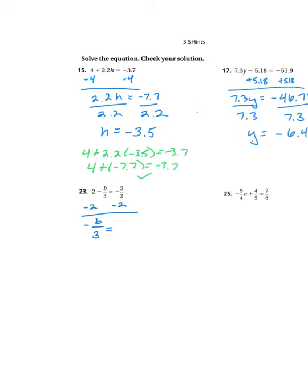So negative 5 halves is negative 2 and a half minus 2 will be negative 4 and a half. Negative 5 over 2 is negative 2 and a half minus 2 is negative 4 and a half. And I could also write that as negative b over 3 equals negative 9 halves. We want to write that as an improper fraction.